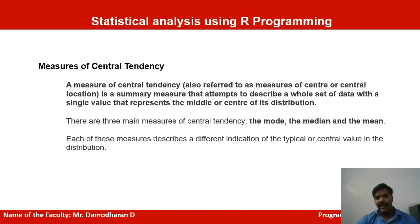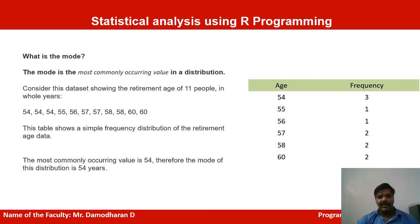Median for that field — mean in this sense is going to calculate the average pattern. We will see one by one. First, we will see the mode. From this example, see this table — there is an age field and a frequency field. Based on these ages, we will calculate the mean. Consider the data set showing the determined age of 11 people in whole years. There are different ages: 54, 55, 56, 57, 58, and 60. From these 11 person ages, some ages are repeated.